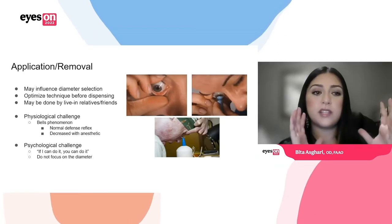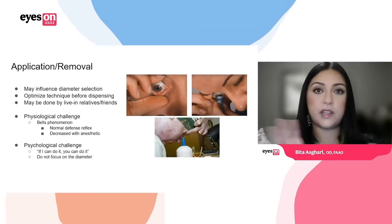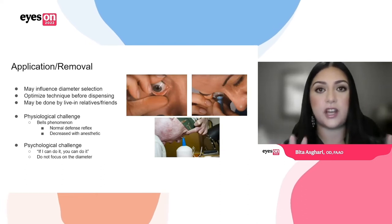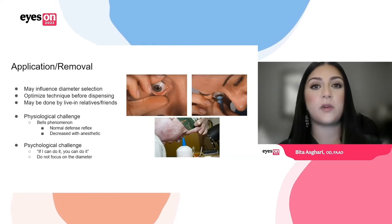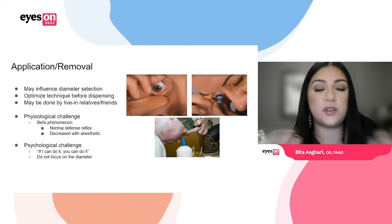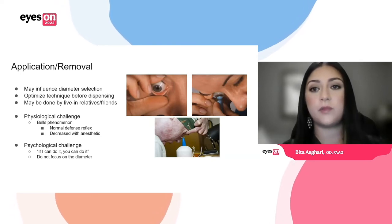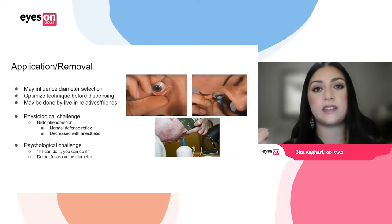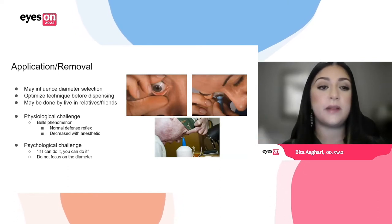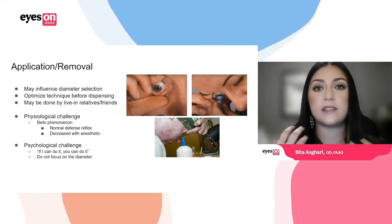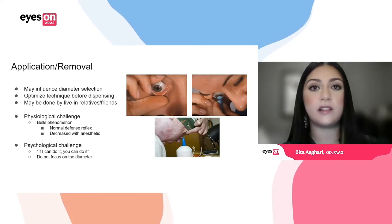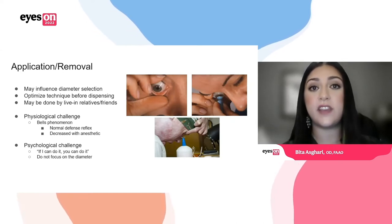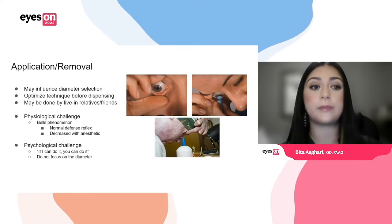For almost every patient there are two categories of challenges when teaching them to apply and remove. Number one is a physiological challenge — patients may have a Bell's phenomenon, which is a normal reflex that can decrease after you use an anesthetic. This can cause the eye to roll back when you try to put a lens on, and can ultimately lead to lens failure if not trained properly.